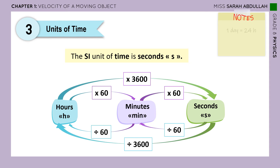We have other units of time as well. One day equals 24 hours. An average month equals 30 days. One year equals 365.25 days.